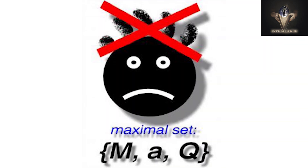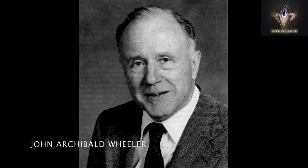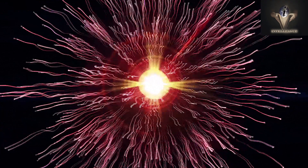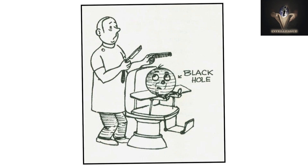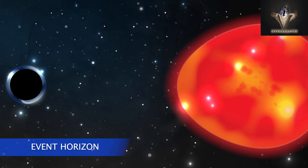The no-hair theorem describes the view of the universe described by American theoretical physicist John Archibald Wheeler in the 1960s. It explained that a black hole created out of matter and another created out of antimatter may have identical properties, but according to the hypothesis, they would be unrecognizable to an observer at the event horizon.